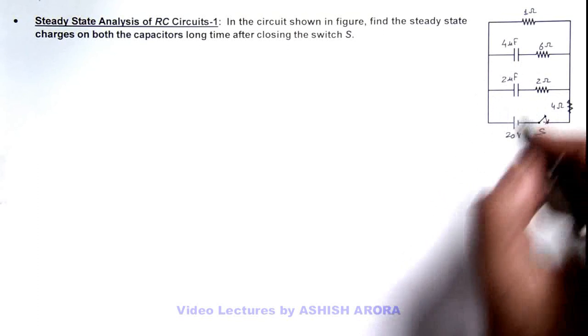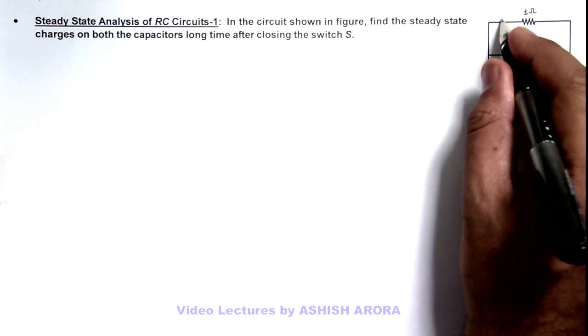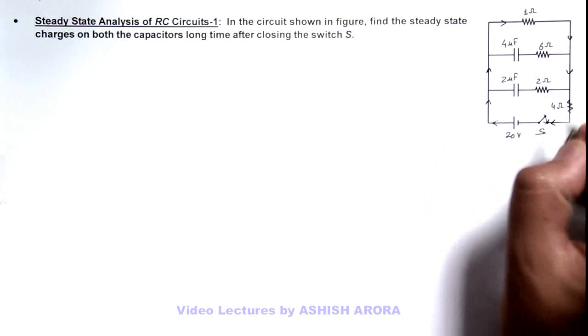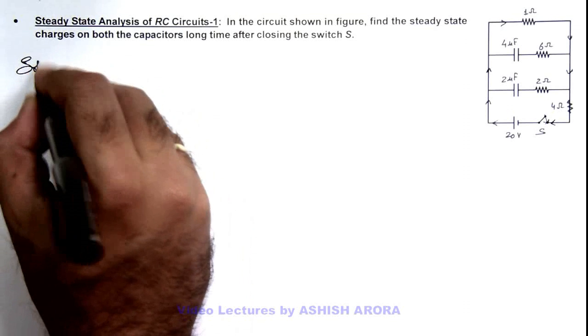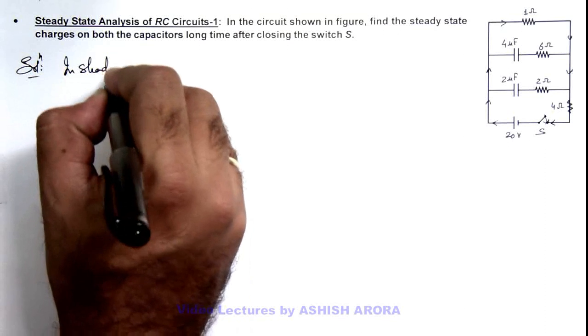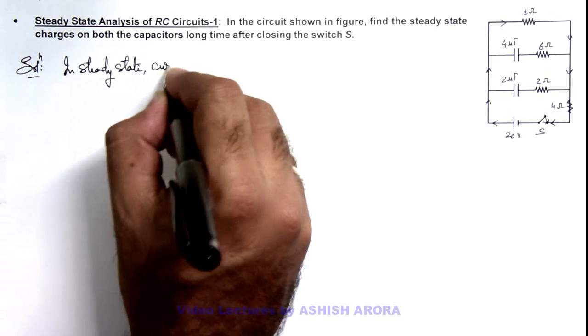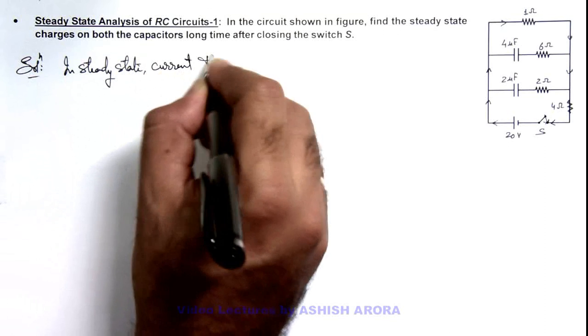Finally in steady state we can say through this 20 volt battery current will flow only in this outer loop. In steady state, current through battery is...